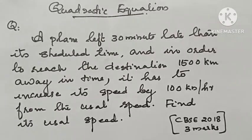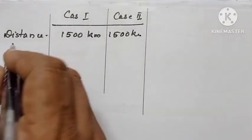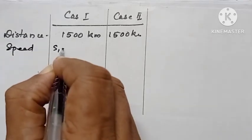Find its usual speed. We can see two cases here. In both cases, distance is same. In the first case, speed is x.